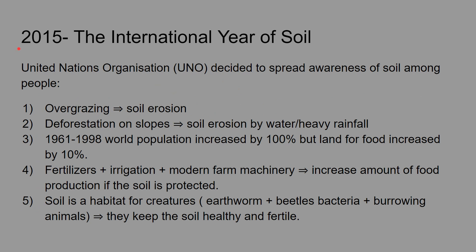Now let's talk about the 2015 International Bureau of Soil, in which the UNO decided to spread awareness of the importance of soil among people. One issue is overgrazing — when animals eat up plants down to the soil level. This leads to soil erosion because there are no roots left to hold the soil, so soil can easily be taken away by wind or water.